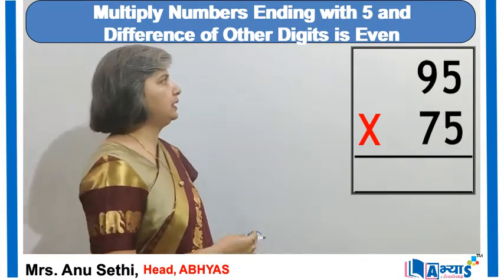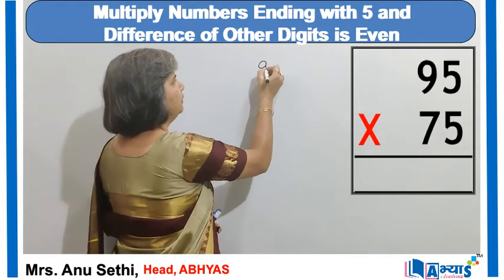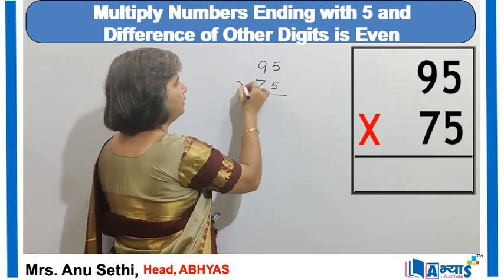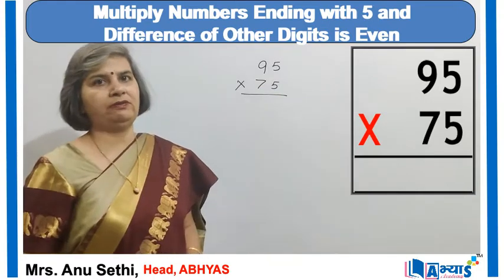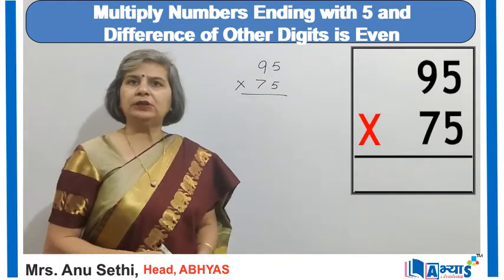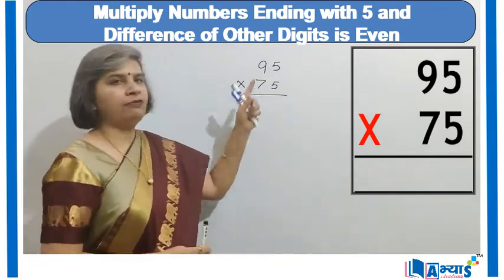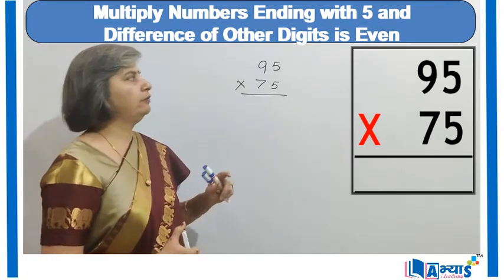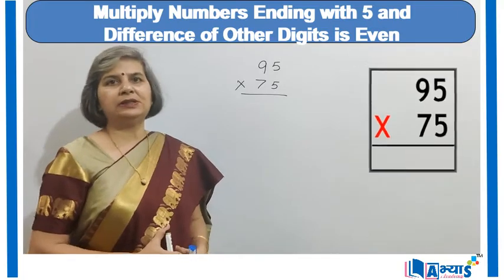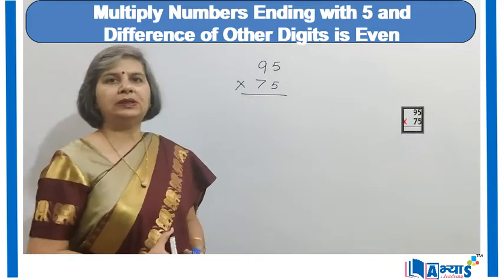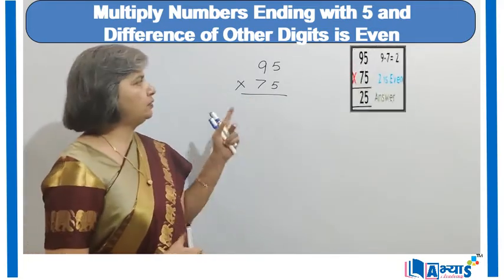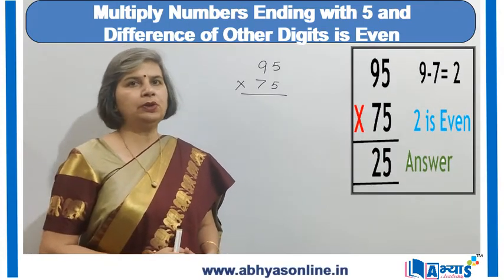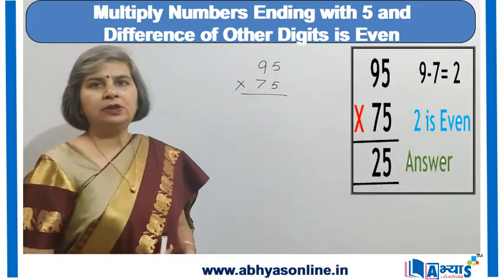Let us take the case of 95 and 75. Both numbers end with 5. The other digit in the first number is 9 and in the second number is 7. The difference of these two digits is 9 minus 7, which is 2, and 2 is even. So we apply the even-difference method.